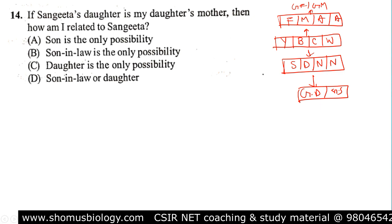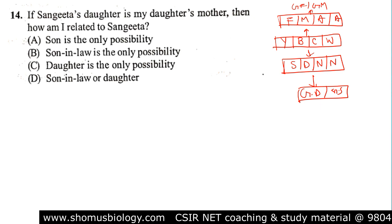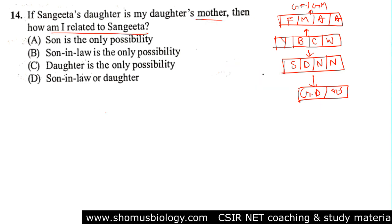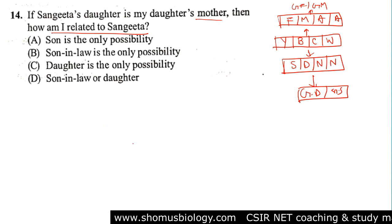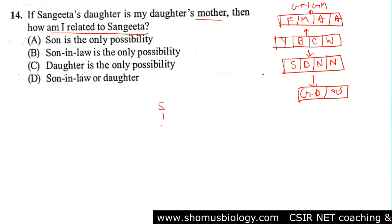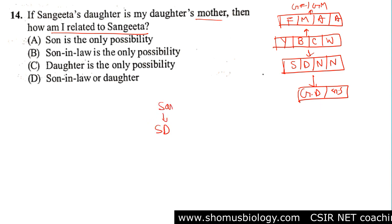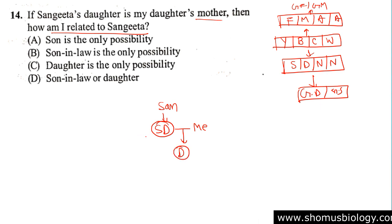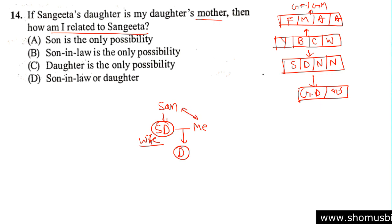Always make sure to put yourself in terms of analyzing the blood relationship asked in the question. In this case: how am I related to Sangeeta? Sangeeta's daughter is my daughter's mother. This is Sangeeta's daughter, this is me, and this is our daughter. Sangeeta's daughter is the mother of my daughter, so basically Sangeeta's daughter is my wife.